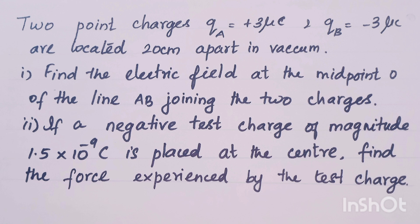Two point charges: QA is equal to plus 3 micro coulomb and QB is equal to minus 3 micro coulomb are located 20 cm apart in vacuum. Find the electric field at the midpoint. If a negative charge of magnitude 1.5 into 10 power minus 9 coulomb is placed at the center, find the force experienced by the test charge.